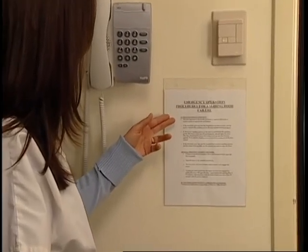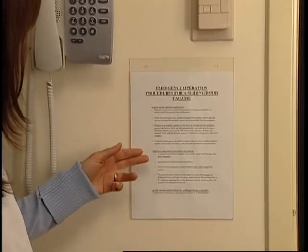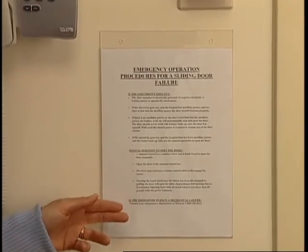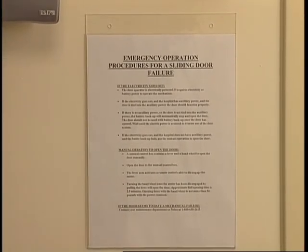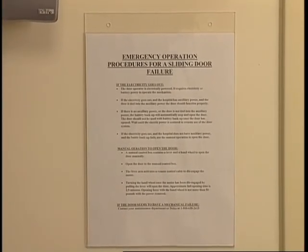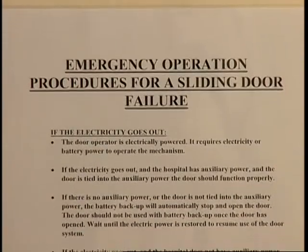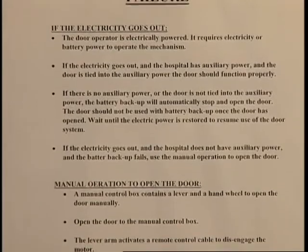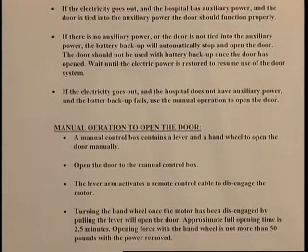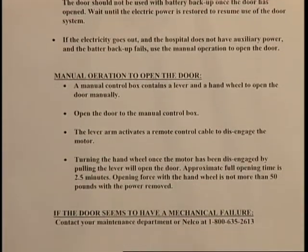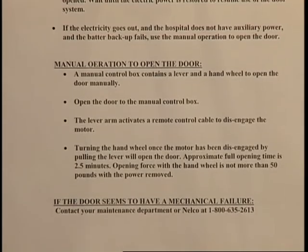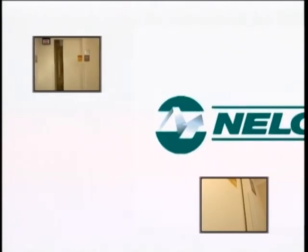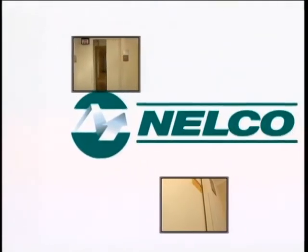The sliding door system owner should develop an operational emergency procedure and clearly post it within sight of the system. Procedures should address a protocol in the event of system failure with someone inside the room. All users should be properly trained and sign off to a complete understanding of policies and procedures. Following these safety guidelines and using common sense will ensure the safe operation of your NELCO sliding door.